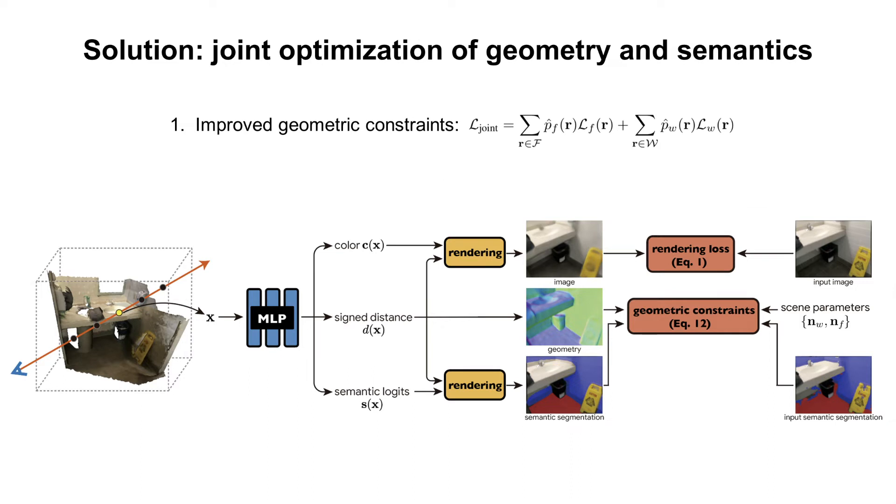The joint optimization strategy can correct some pixels which are misclassified to planar regions by reducing the corresponding probabilities. Note that a trivial solution is that both the probabilities of being floors and walls vanish. To avoid this, we also supervise the semantics using the cross-entropy loss.